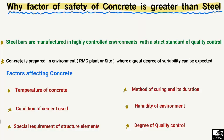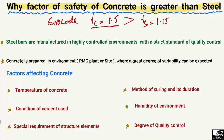If we look at the Eurocode, for example, the factor of safety of the concrete material is taken as 1.5, whereas for the steel bar the factor of safety is taken as 1.15. So the factor of safety for concrete is quite greater than that of the steel bar. What is the reason behind this? Why do we always take a higher factor of safety for concrete compared to steel?